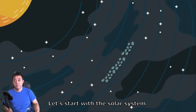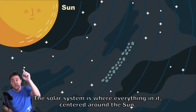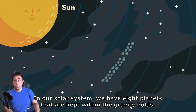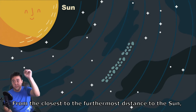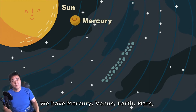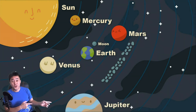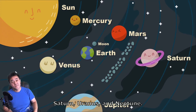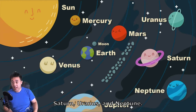Let's start with the solar system. The solar system is where everything in it is centered around the sun. In our solar system, we have eight planets that are kept within gravity's hold. From the closest to the furthermost distance to the sun, we have Mercury, Venus, Earth, Mars, Jupiter, Saturn, Uranus, and Neptune.